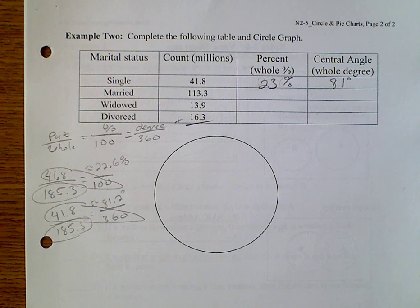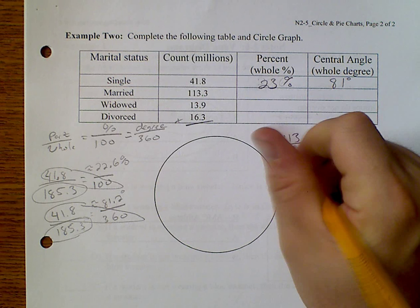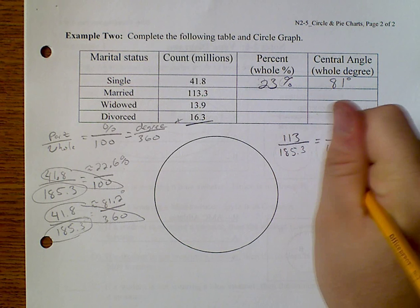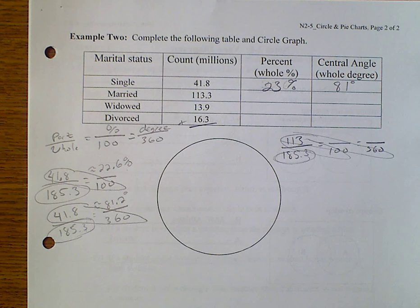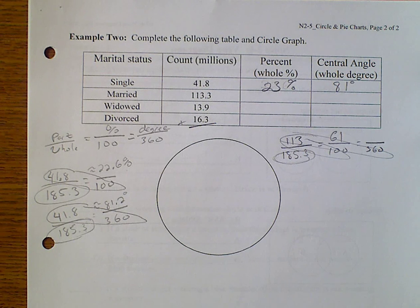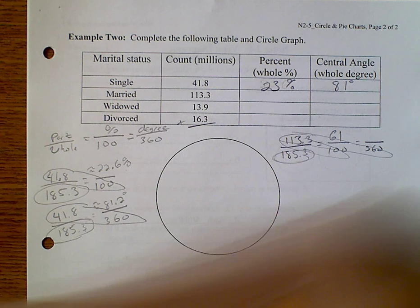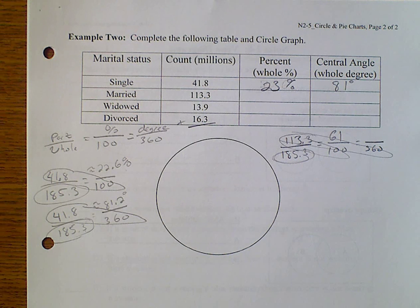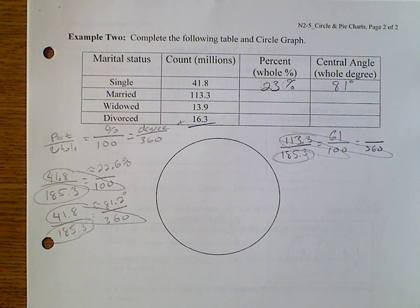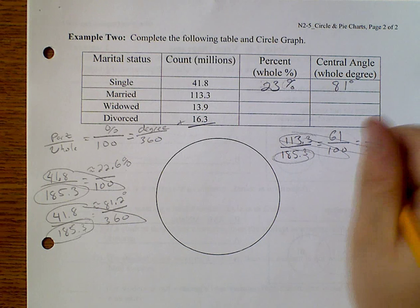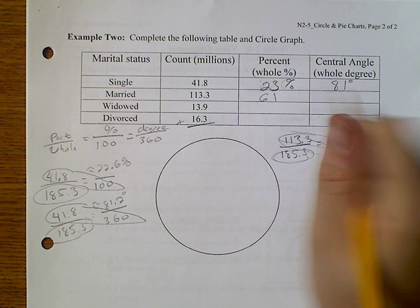And we're going to do the same thing for all of the rest. 113 over 185.3 for 100 and 360 gives us 61. 113.3 times 360 over 185.3. 123.5 gives us 220. So 61 and 220.